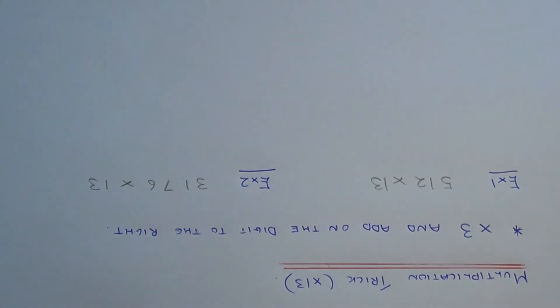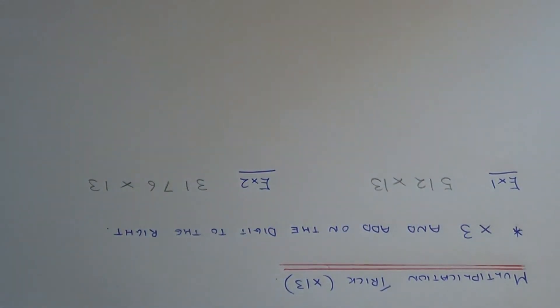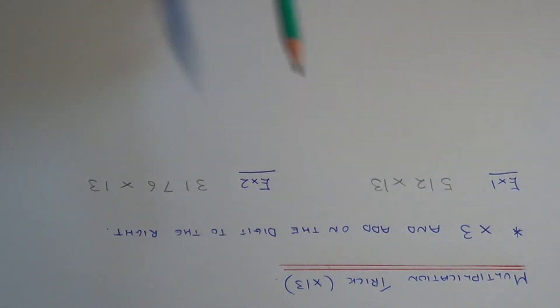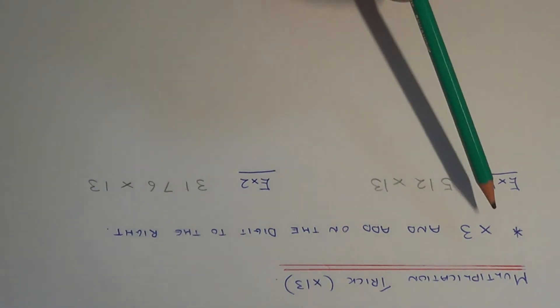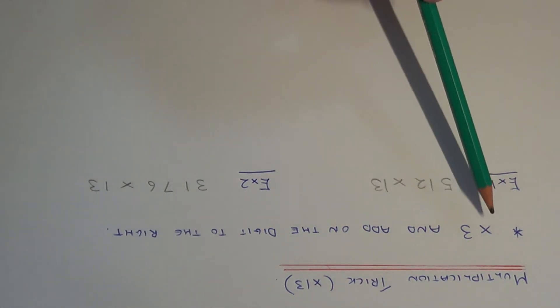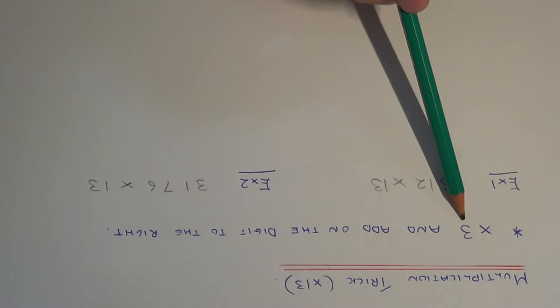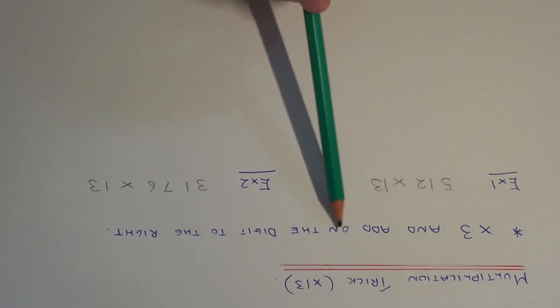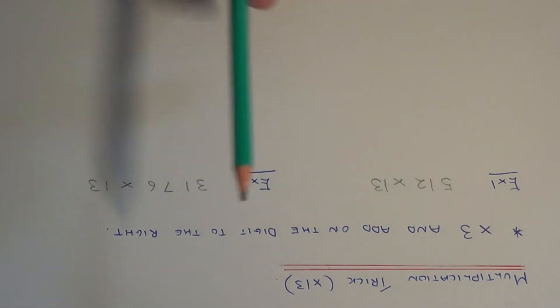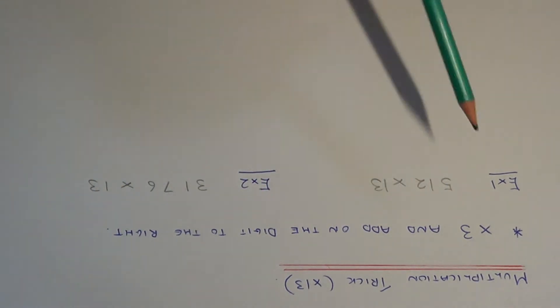Today I'm going to show you a cool multiplication trick for multiplying any number by 13. The rule which you need to follow — this will make more sense in a minute — is to multiply each digit by 3 and add on the digit to the right.